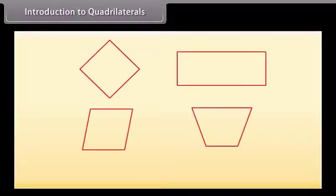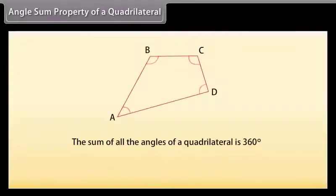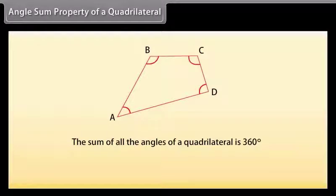Look at these shapes — all of these are quadrilaterals because they have four sides, four angles, and four vertices. The angle sum property of a quadrilateral states that the sum of all the angles of a quadrilateral is 360 degrees.